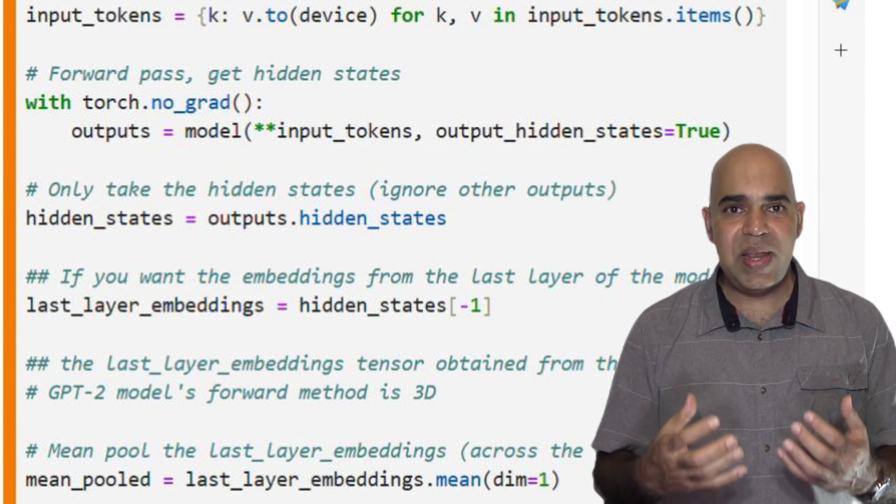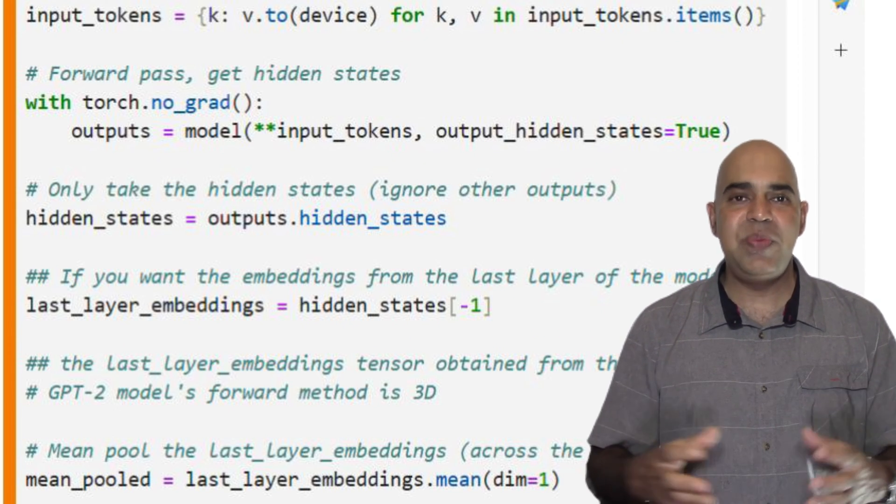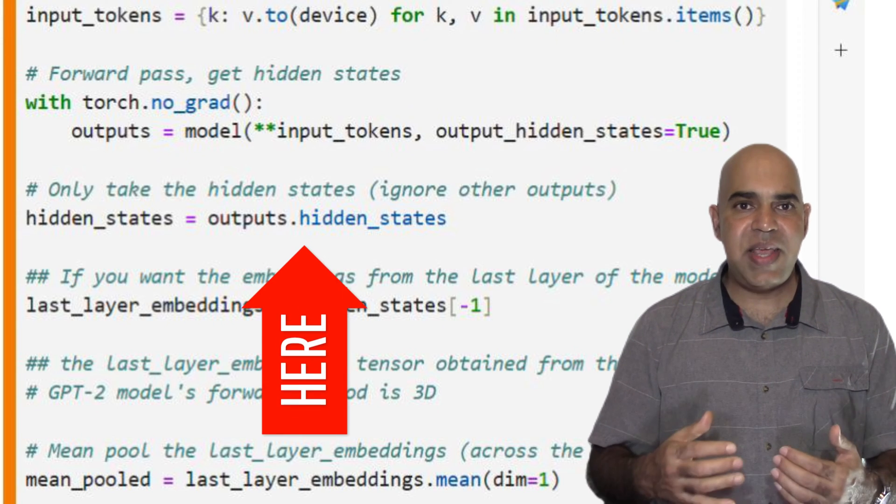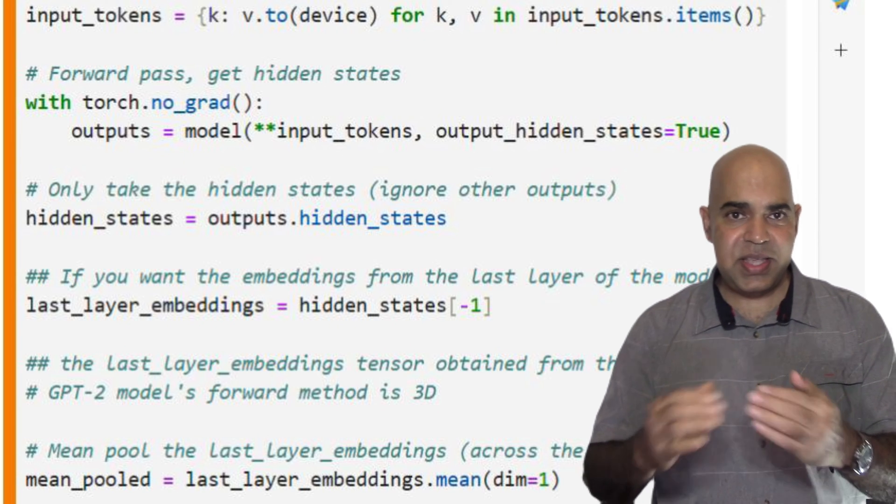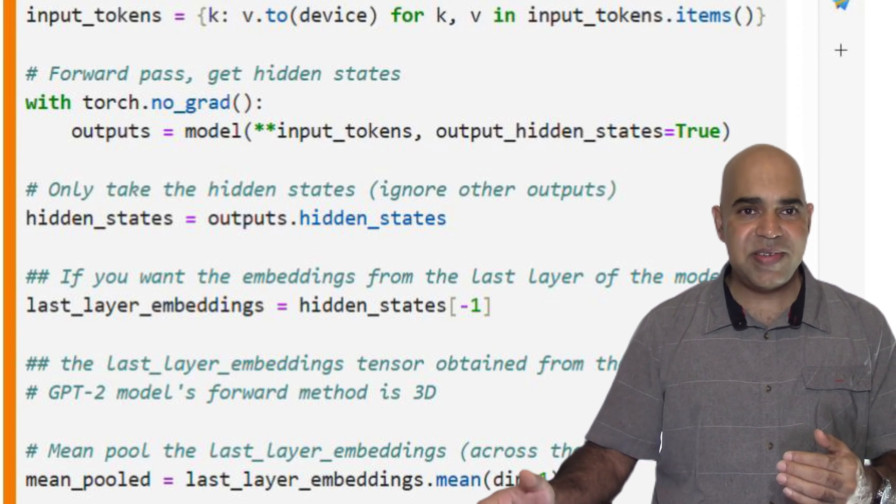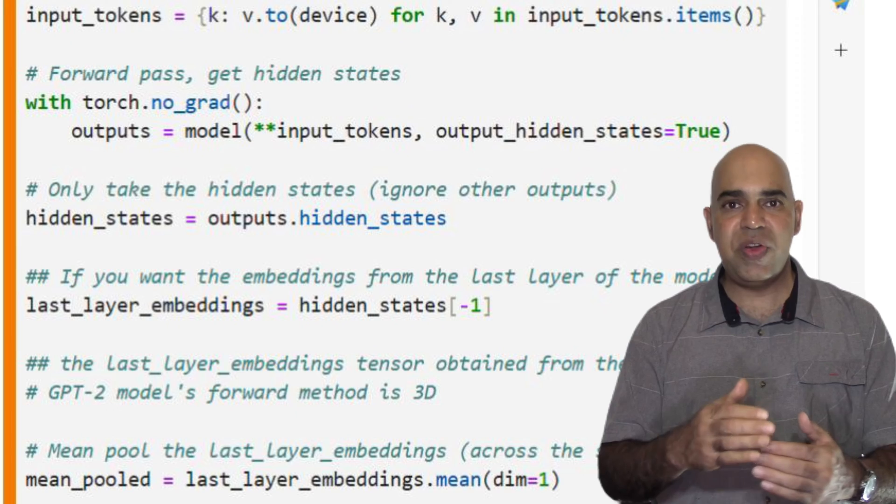The hidden states will have our embeddings for the input text. I am extracting the hidden states from the outputs. In GPT-2, there are several embeddings in different layers. I am grabbing the hidden states from the last layer.